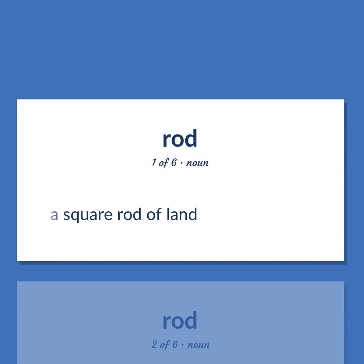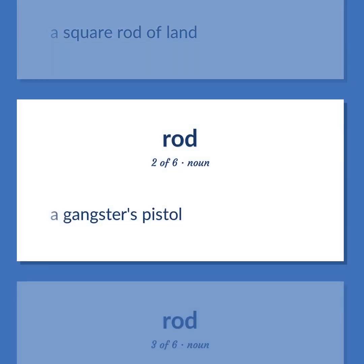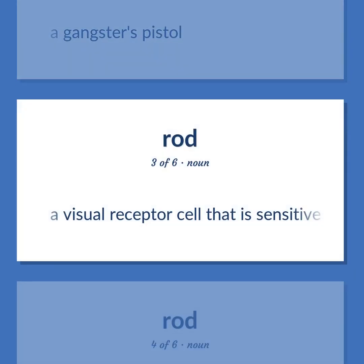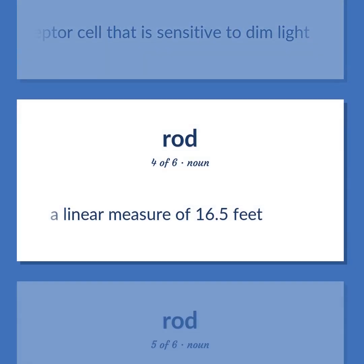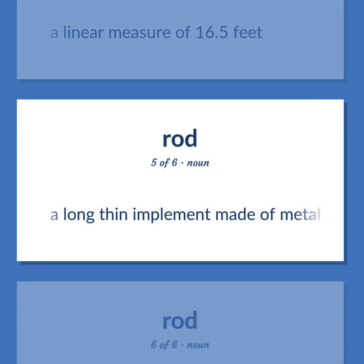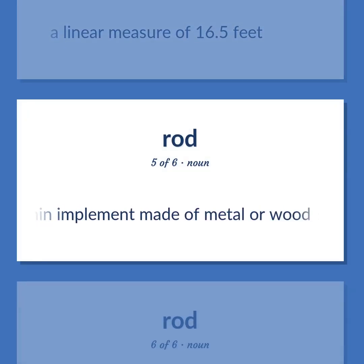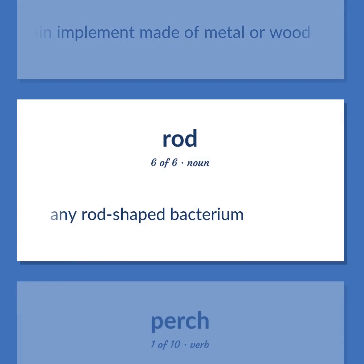A square rod of land. A gangster's pistol. A visual receptor cell that is sensitive to dim light. A linear measure of 16.5 feet. A long thin implement made of metal or wood. Any rod-shaped bacterium.